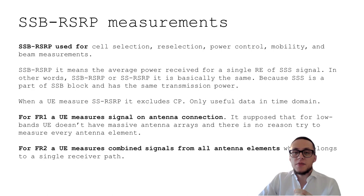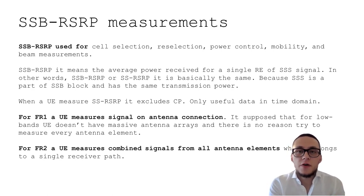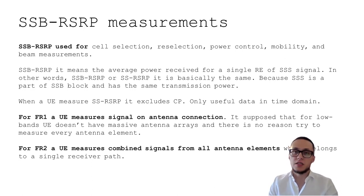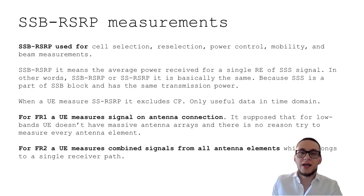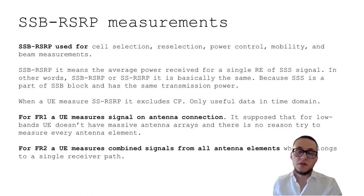SSB RSRP means the average received power of one resource element of the secondary synchronization signal. In other words, SSB RSRP and SSRSRP are basically the same — you may see different variations in different sources, but they refer to the same measurement because the secondary synchronization signal is part of the SSB and has the same transmission power. So in many cases we can assume they are equivalent.